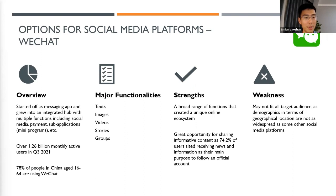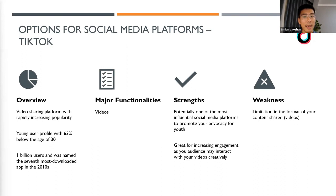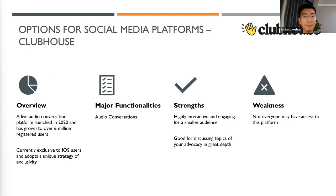WeChat started as a messaging app and grew into an integrated hub with multiple functions including social media, payment, sub-applications, and mini-programs. It has over 1.2 billion monthly active users in 2021, with majority in China but a significant portion in other developing countries. TikTok, called Douyin in China, is an uprising platform where people share videos and lifestyles — particularly popular among young people, with 63% of users under age 30.